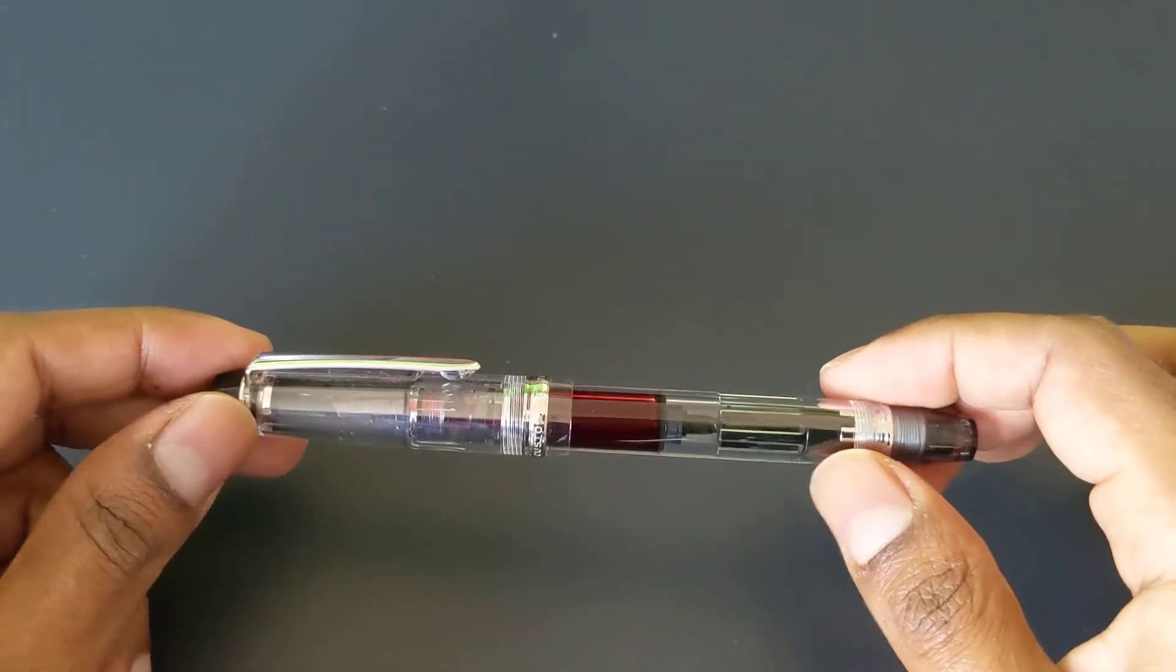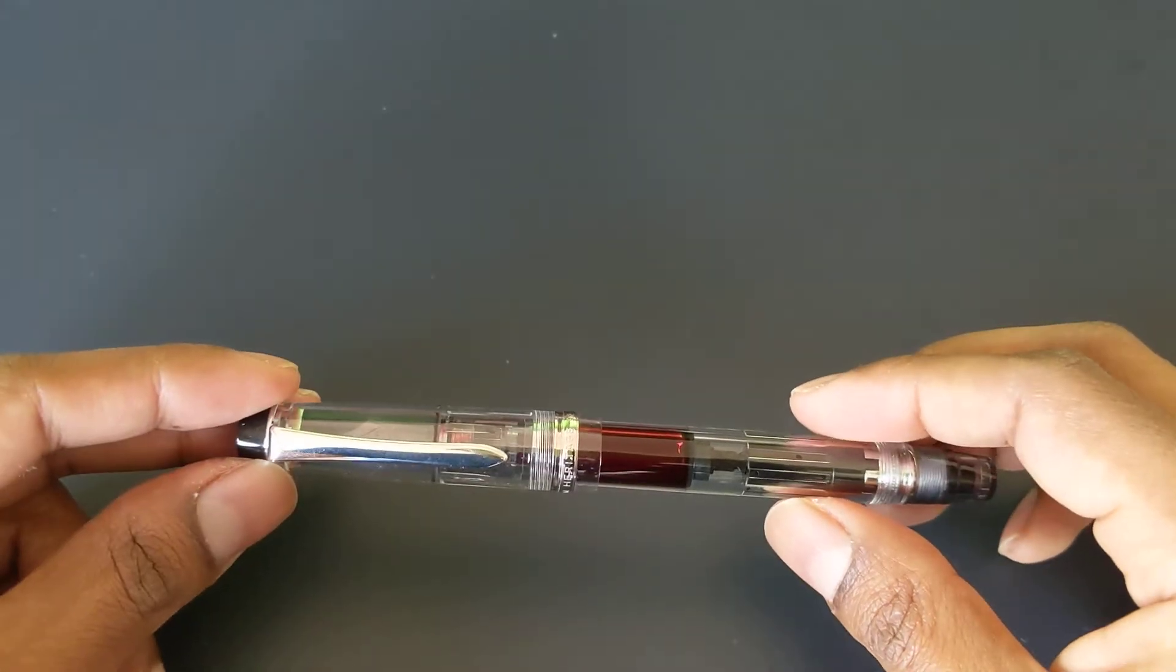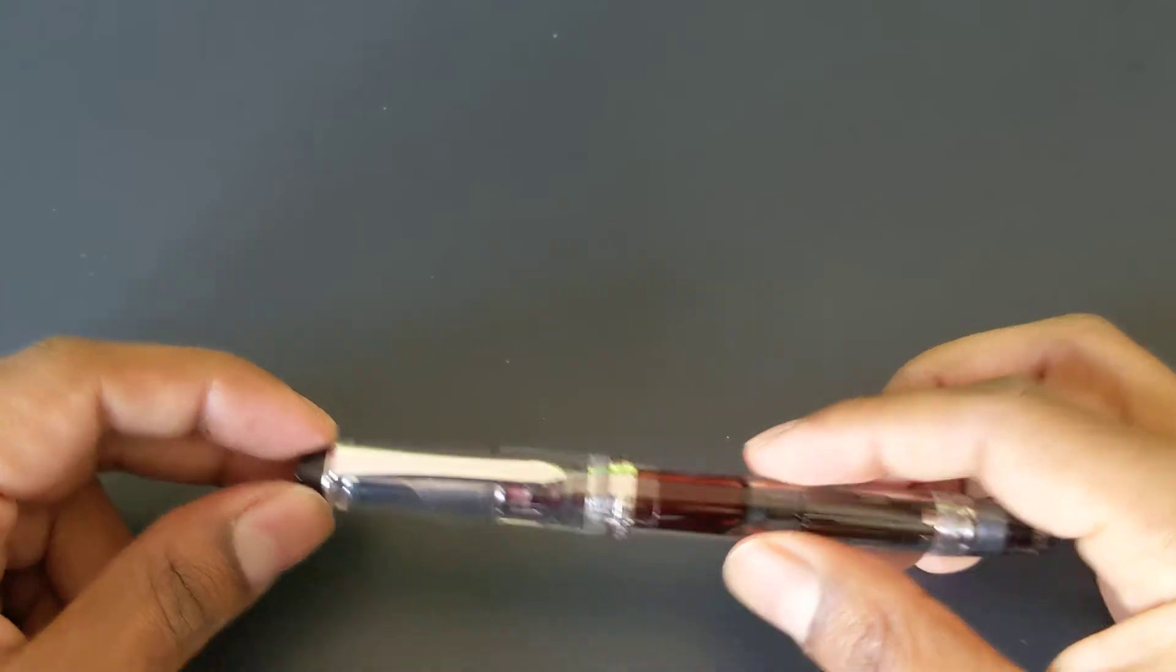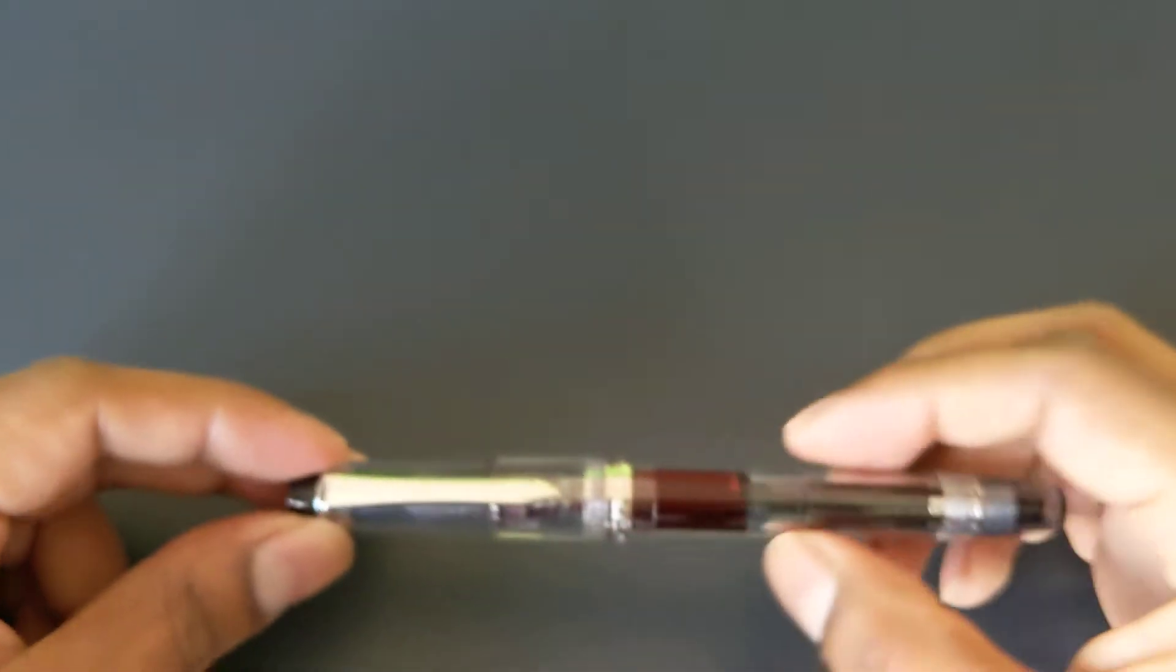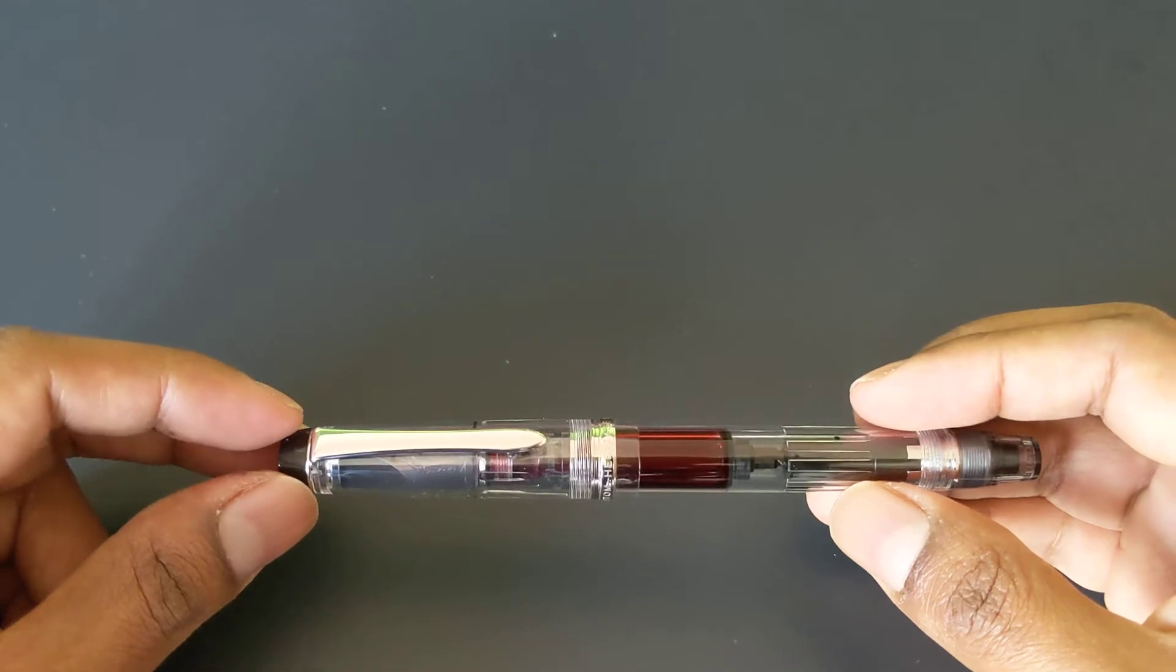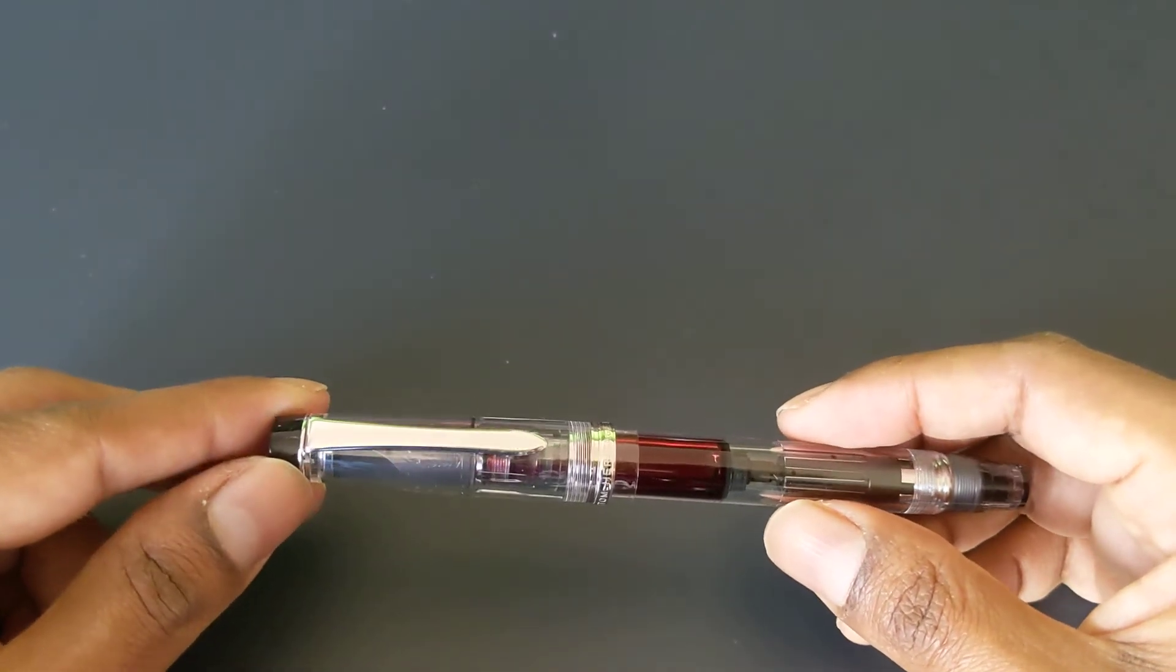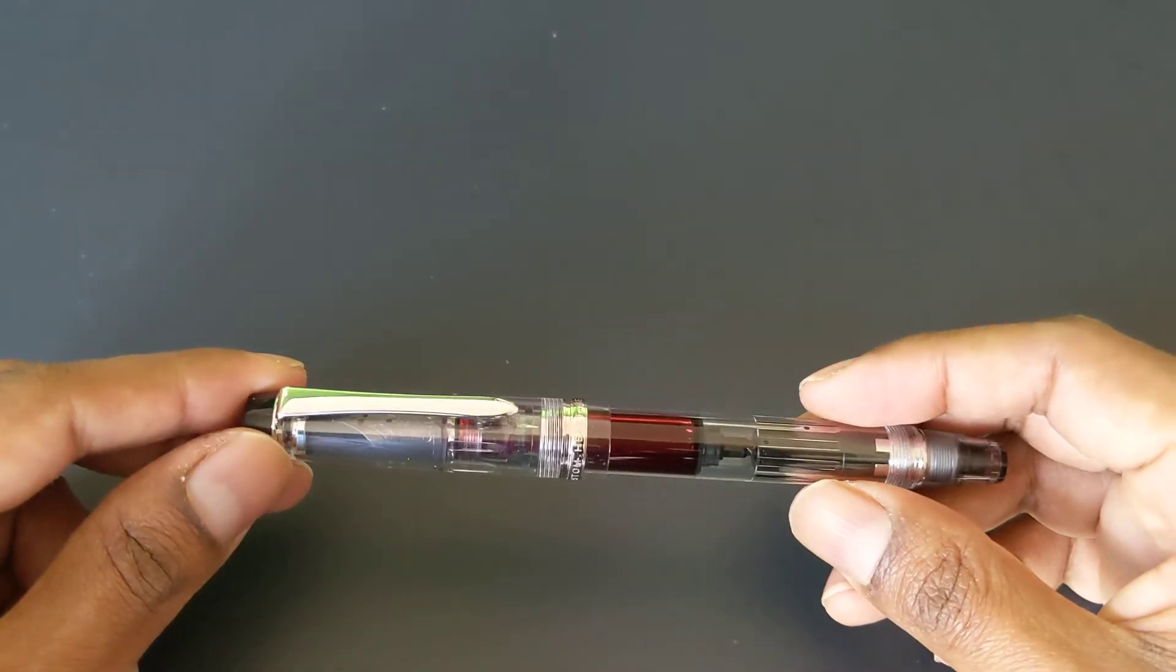One thing I want to note while we're talking about the design of the pen is that the piston on this pen is excellent. It's very smooth, it draws ink in pretty quickly so you don't need to screw and unscrew the piston many times. It's pretty much just one. If you really want to get it full, moving the piston back twice will be fine. This makes cleaning the pen very easy because water will come in and out pretty nicely. It's still not as easy to clean as a cartridge converter pen, but as far as piston filling pens go, this is a good piston filler.